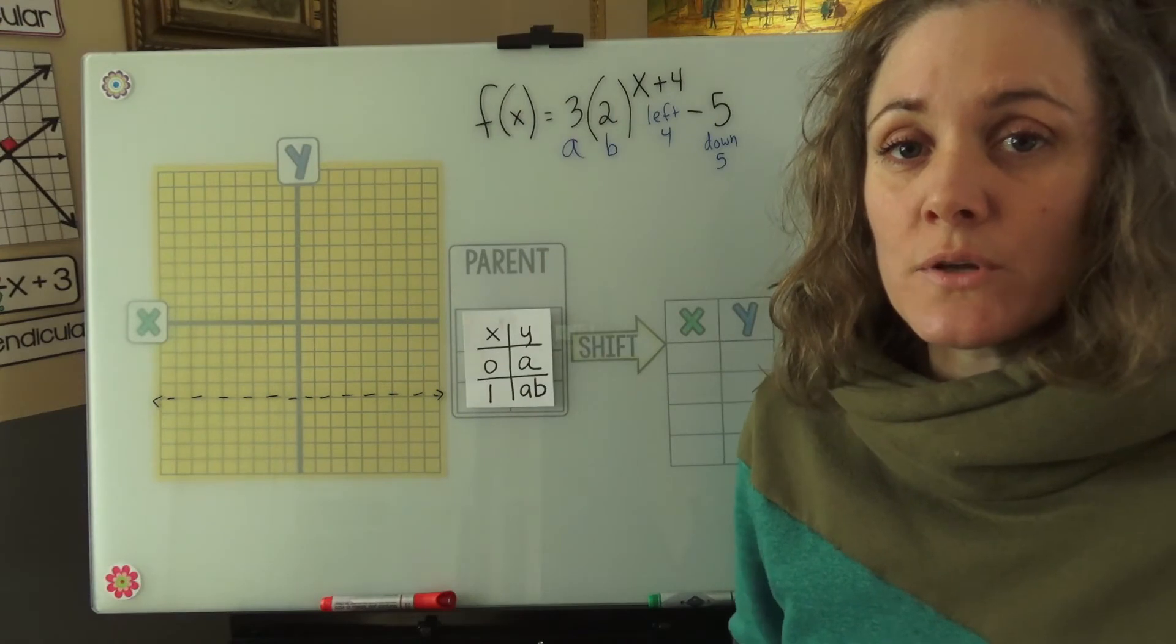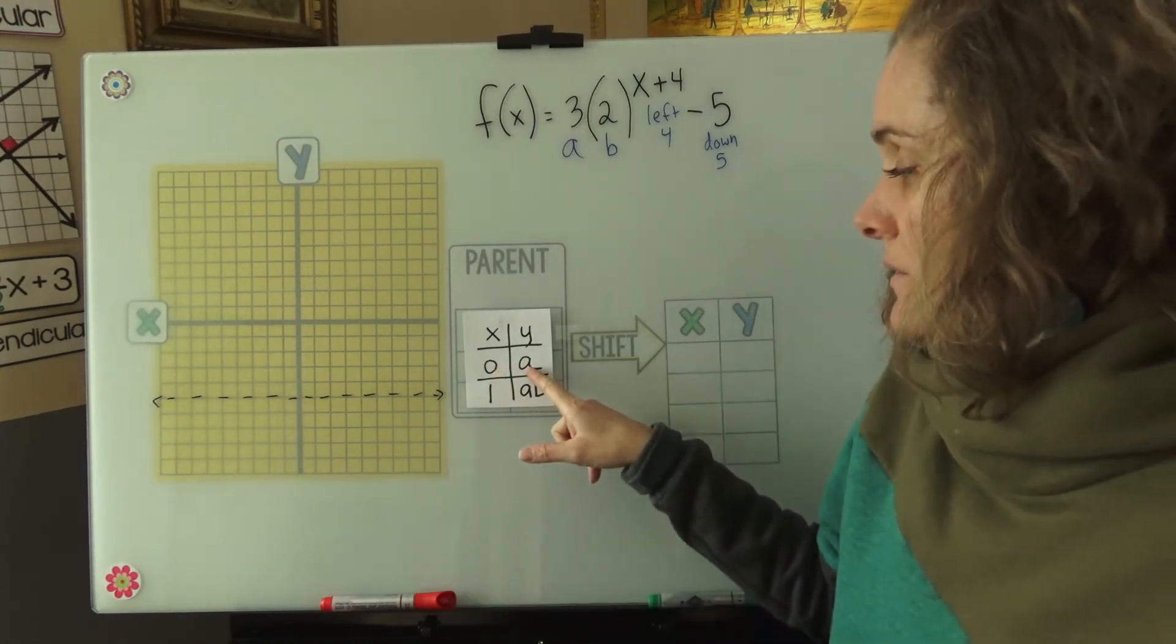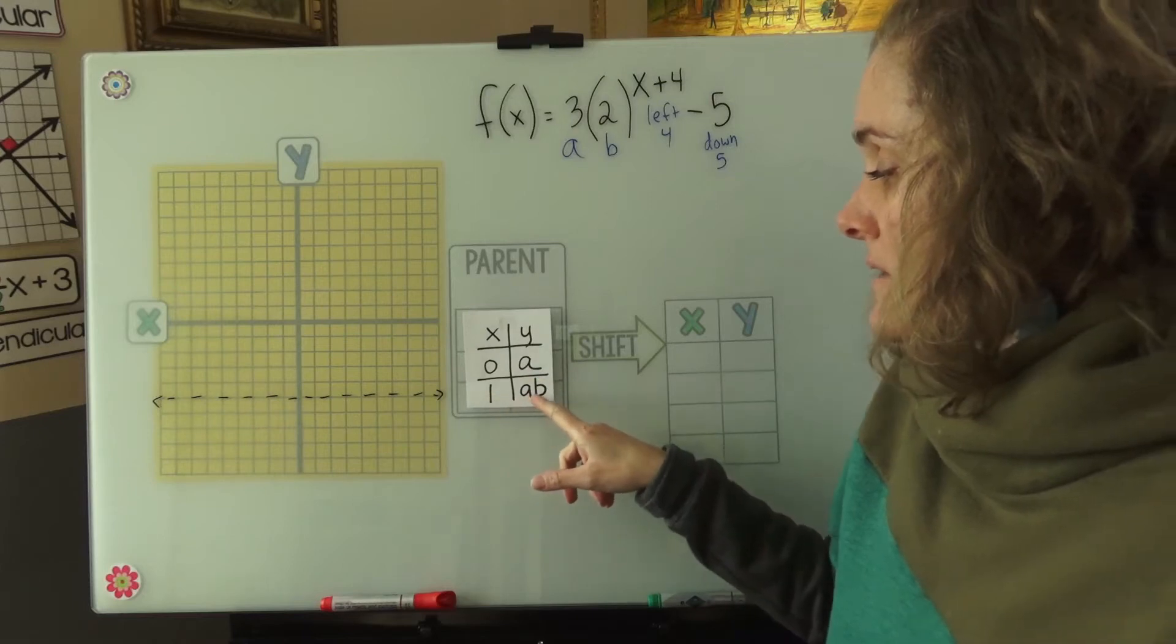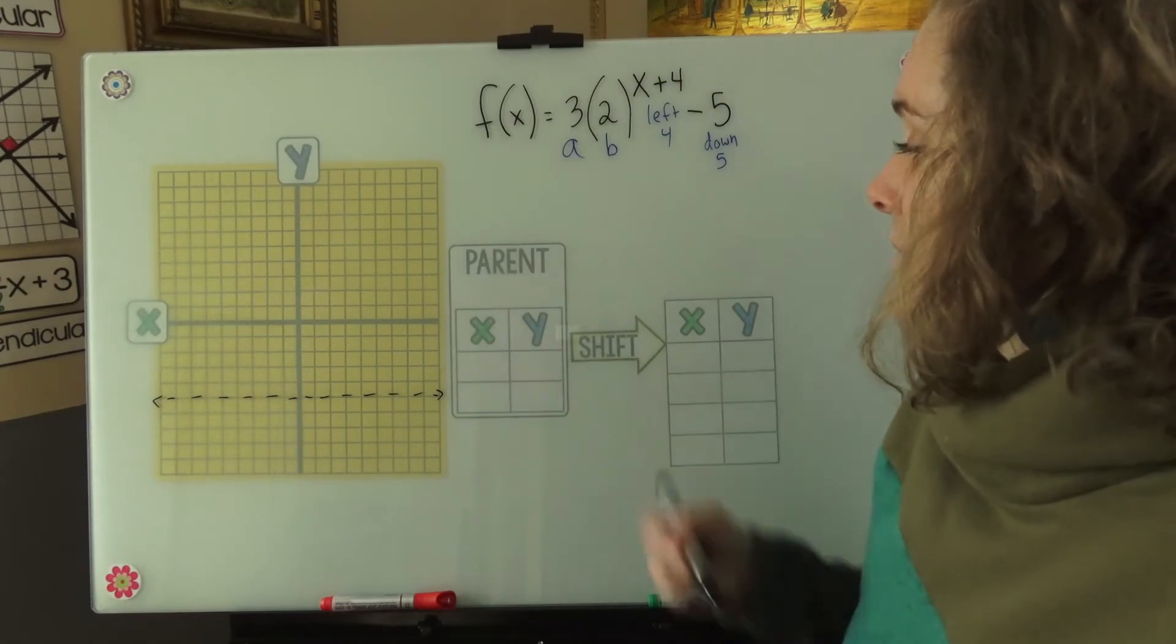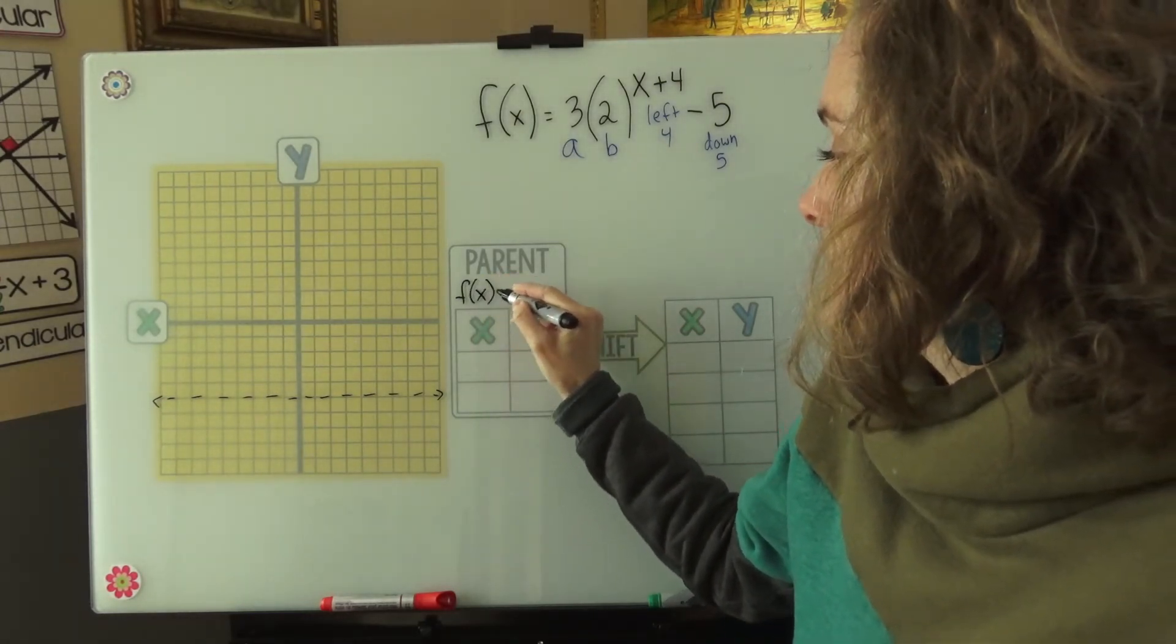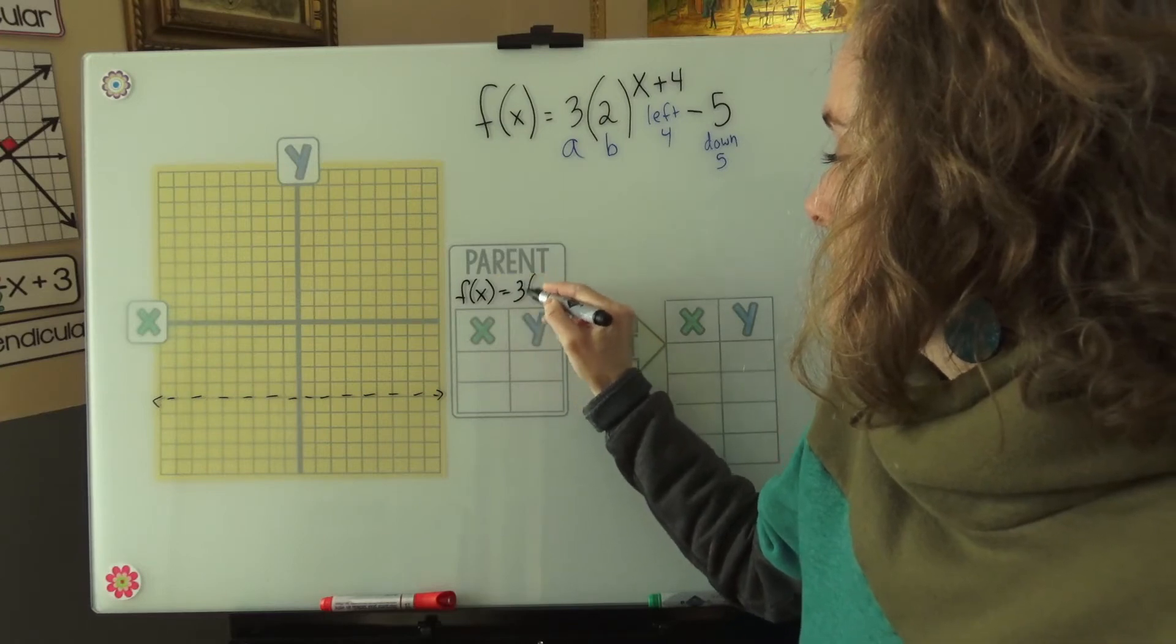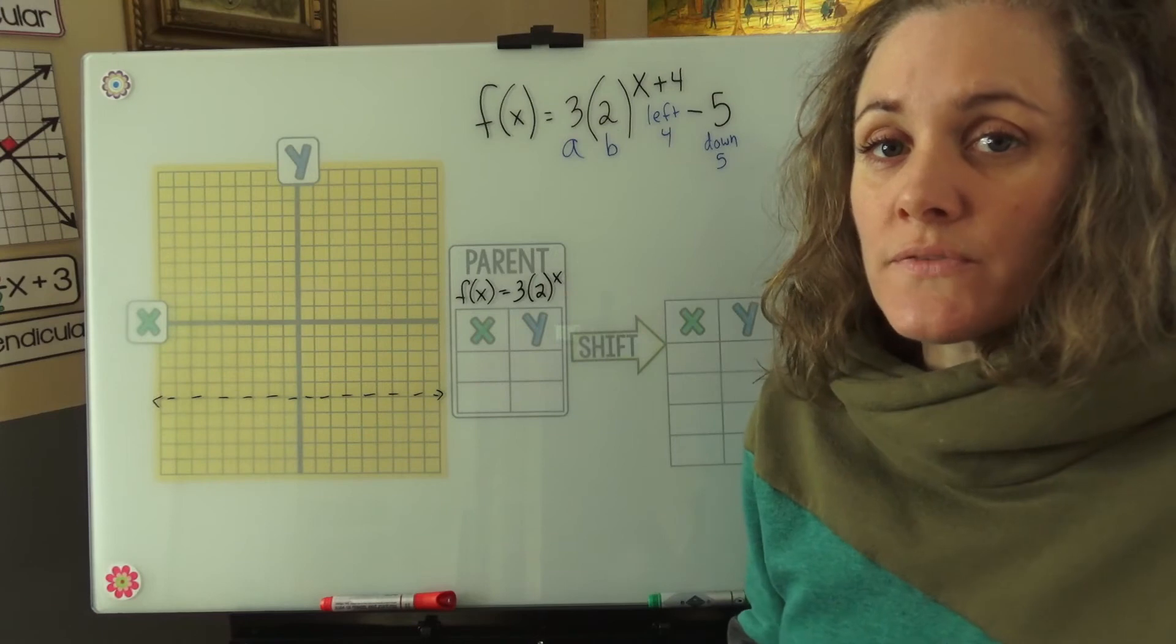All exponential parent tables follow the same pattern. We have a 0, a, 1, a, b. Our parent function will be f of x equals 3 times 2 to the x. We're going to drop the shifts for now.